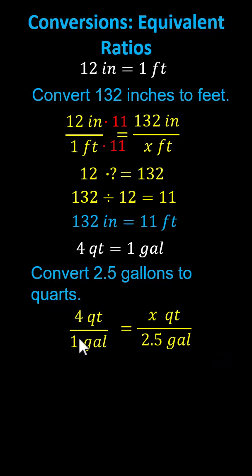Focusing on the denominators, notice we need to multiply one gallon by 2.5 to get 2.5 gallons, which means we multiply both four quarts and one gallon by 2.5. 4 times 2.5 is 10, which indicates the ratio of four quarts to one gallon is equivalent to the ratio of 10 quarts to 2.5 gallons, indicating 2.5 gallons equals 10 quarts.